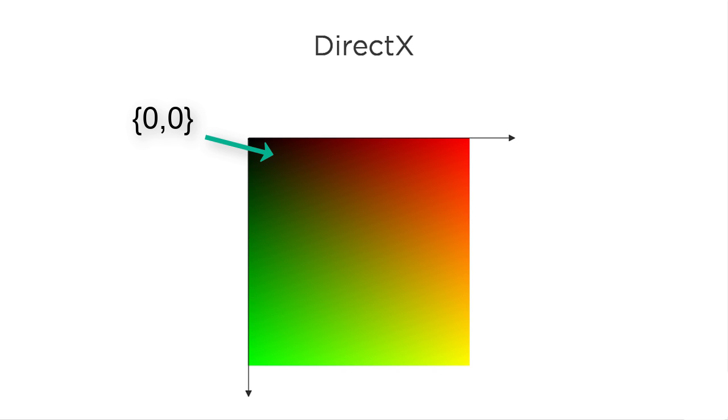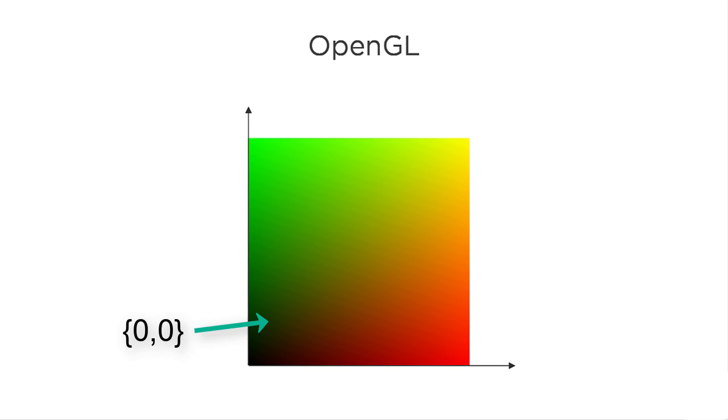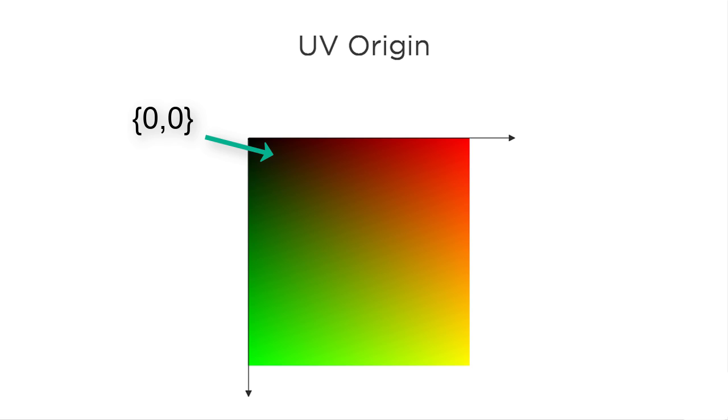DirectX defines the origin to be in the upper left corner, and OpenGL defines it to be in the lower left. In Unreal, we're dealing with the former, where the origin is in the upper left, so all the material in this course will assume that is the case.